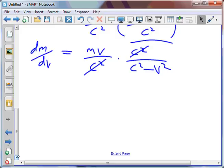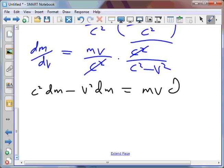As it turns out, multiplying both sides by c squared minus v squared, multiplying both sides by dv, I end up with c squared dm minus v squared dm equaling mv dv.